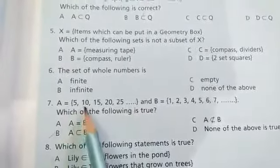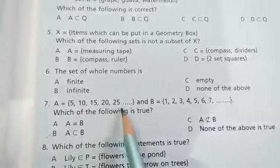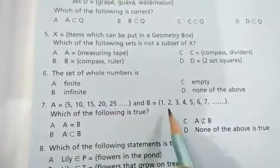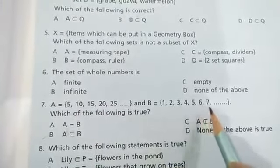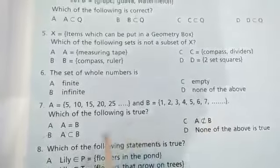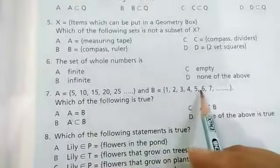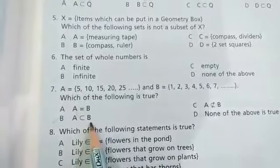A = {5, 10, 15, 20, 25, ...} and B = {1, 2, 3, 4, 5, 6, 7, ...}. So A is the proper subset of B. Option number B is the correct answer.